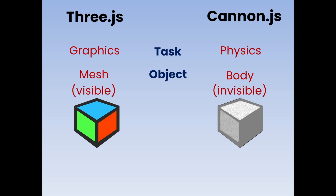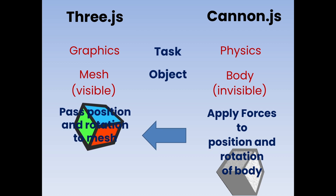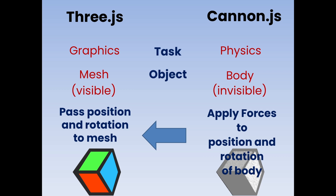So how does this work? Basically in Cannon.js we apply the physical forces to the position and rotation of the bodies in that world, and then we take the position and rotation of those bodies and pass it into Three.js, so Three.js knows where to draw the mesh objects. So we have to write code for Cannon.js to manipulate the bodies in the physics world, and then we pass the position and rotation information into Three.js so it can draw the mesh objects.